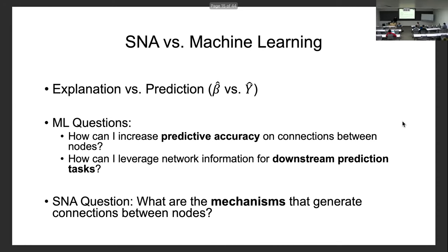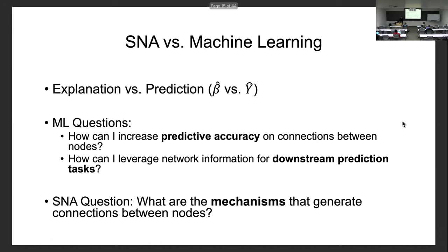In social network analysis, it's less about prediction and more about explanation — after all, it's a social science, and science is about understanding and explaining. You can represent these differences as beta hats versus y hats: beta hat is the parameter estimate representing the relationship between two variables, which represents explanation, whereas y hat is the predicted value, which is the interest of machine learning.